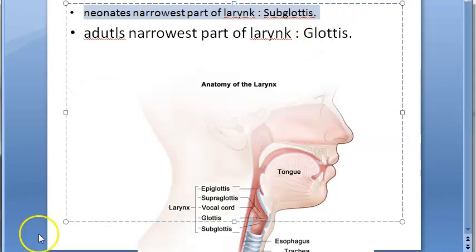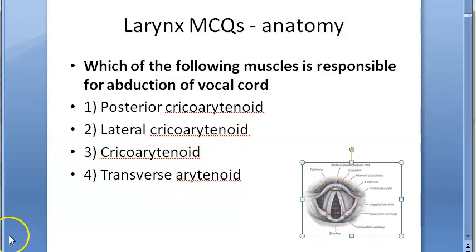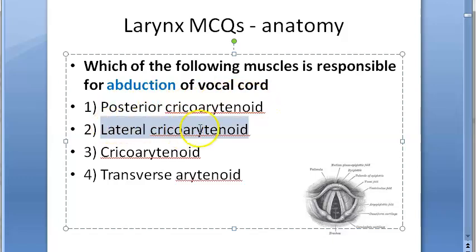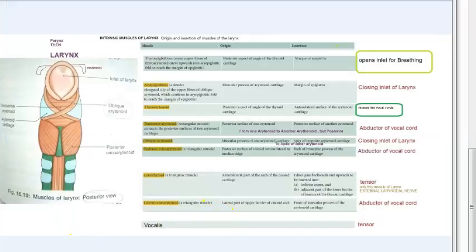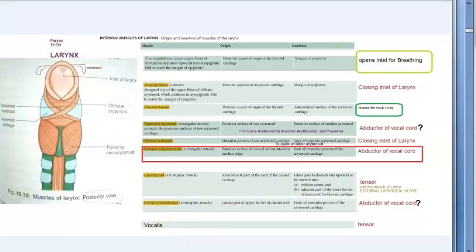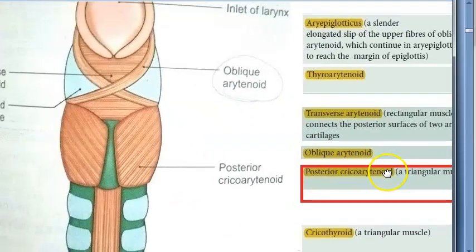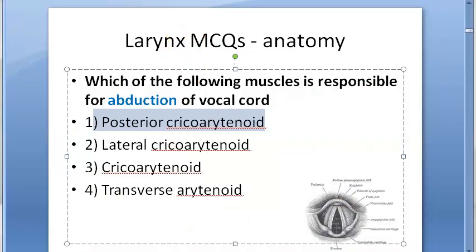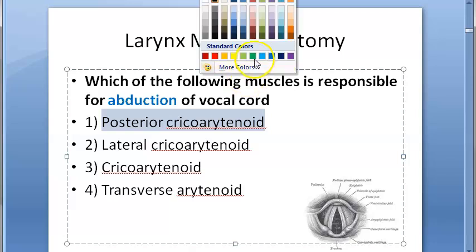Which muscle is responsible for abduction of the vocal cord? The options are posterior cricoarytenoid, lateral cricoarytenoid, cricoarytenoid, and transverse arytenoid. Focus on posterior cricoarytenoid — it is the abductor of the vocal cord. The answer is posterior cricoarytenoid.